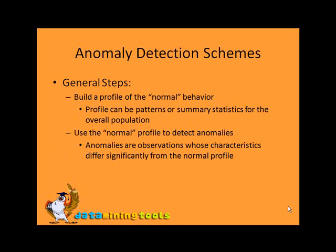General Steps: First, build a profile of normal behavior. Profiles can be patterns or summary statistics for the overall population. Then use the normal profile to detect anomalies. Anomalies are observations whose characteristics differ significantly from the normal profile.